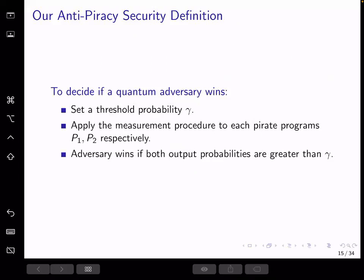And finally, we can see how we decide if a quantum adversary wins the above game. At the beginning, the challenger sets a threshold gamma. Then apply the measurement procedure to each of the pirate programs, P1, P2, respectively. We accept a pirate program if the success probability is greater than gamma. So the adversary wins if both probabilities are greater than gamma. And this gamma threshold is chosen depending on the family functions we try to copy-protect and other factors related to applications or situations when we use copy-protection.